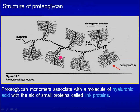This structure resembles a bottle brush. Each of these is a proteoglycan monomer. Each monomer is made up of chondroitin sulfate and keratan sulfate attached to the core protein. The protein is then attached to hyaluronic acid non-covalently with the aid of linker proteins.